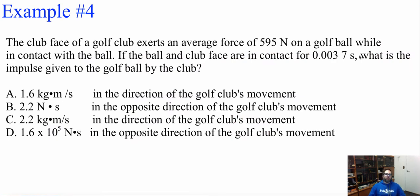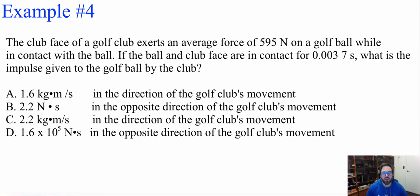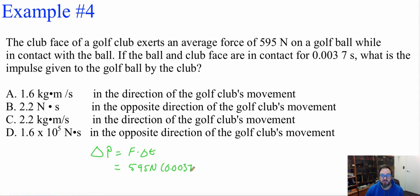Example 4: a club face of a golf club exerts an average force of 595 newtons on a golf ball while in contact. If the ball is only in contact for 0.0037 seconds, what is the impulse given to the golf ball? The force accelerates it for only 0.0037 seconds. Our formula is: impulse equals force times time. Force is 595 newtons and time is 0.0037 seconds. Multiplying these together, we get 2.2 newton seconds.